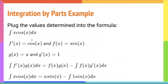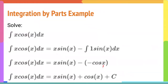We plug in the values into the formula. The integral of x·cos(x) dx equals x times the integral of cos(x), which is sin(x), minus the integral of the derivative of x, which is 1, times sin(x) dx. The integral of 1·sin(x) dx equals −cos(x). Finally, we simplify and add +C. This is our final answer.